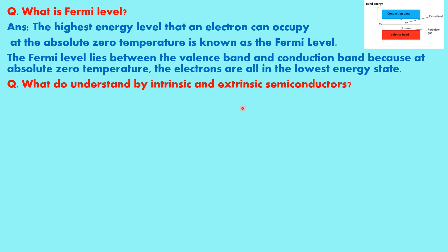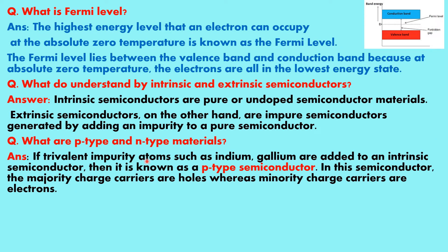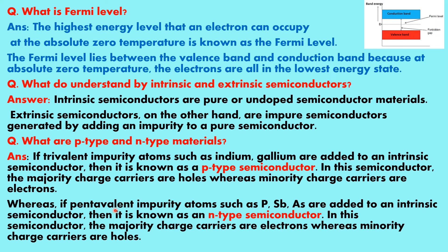What do you understand by intrinsic and extrinsic semiconductors? Intrinsic semiconductors are pure or undoped semiconductor materials. Extrinsic semiconductors are impure semiconductors generated by adding an impurity to a pure semiconductor. What are p-type and n-type materials? If a trivalent impurity such as indium, gallium, or aluminium is added to an intrinsic semiconductor, it is known as p-type semiconductor, where majority charge carriers are holes and minority charge carriers are electrons. Whereas if pentavalent impurity atoms such as phosphorous, antimony, or arsenic are added, it is known as n-type semiconductor, where the majority charge carriers are electrons.